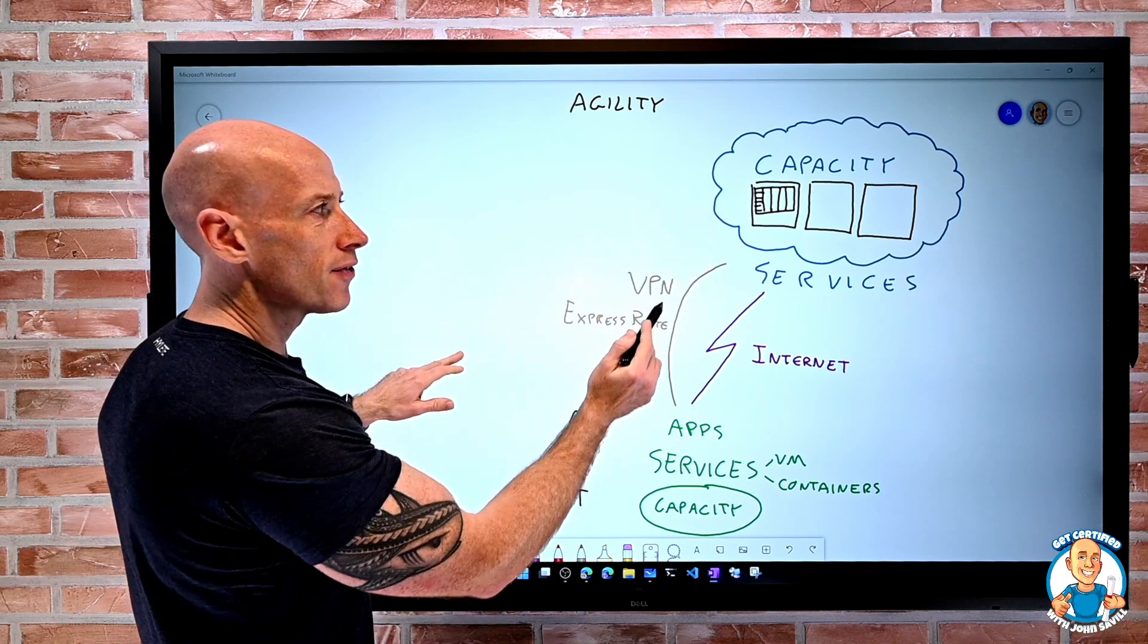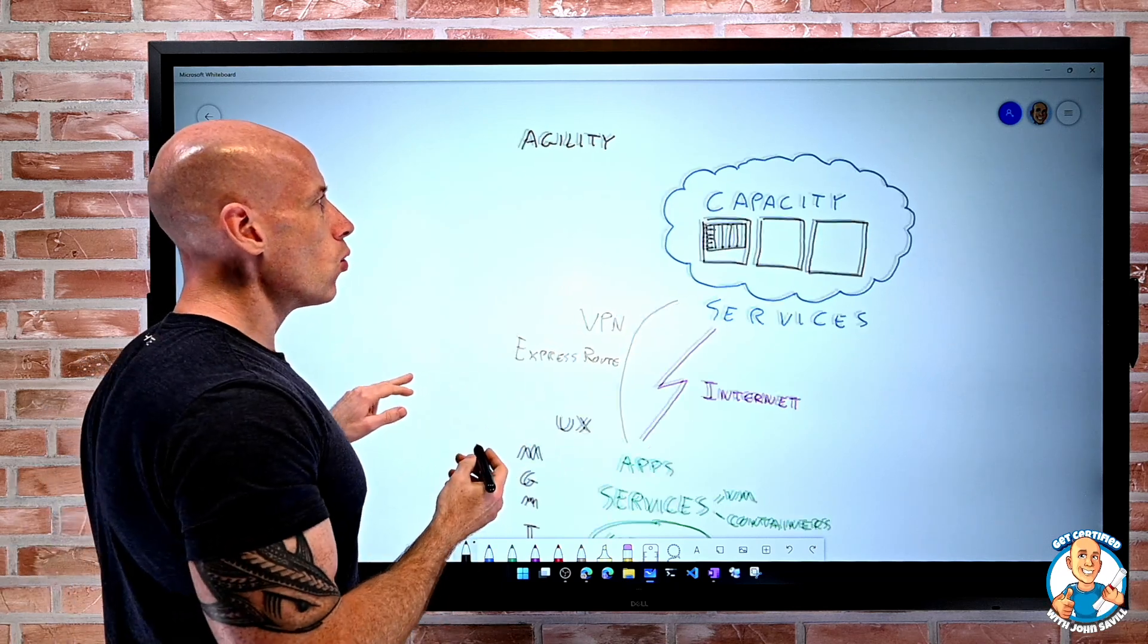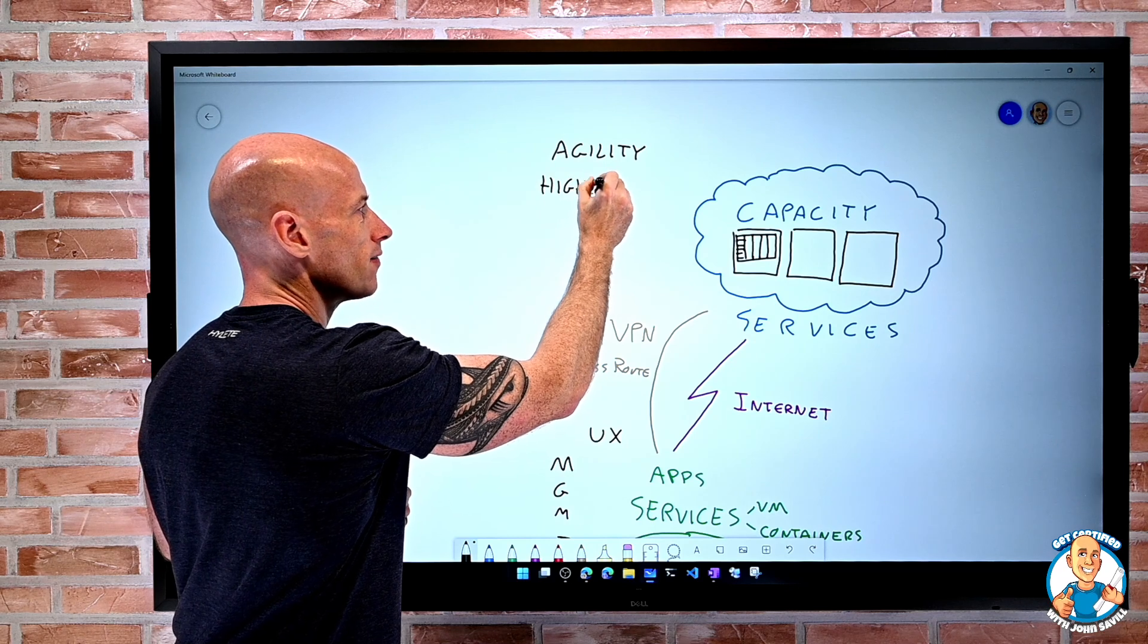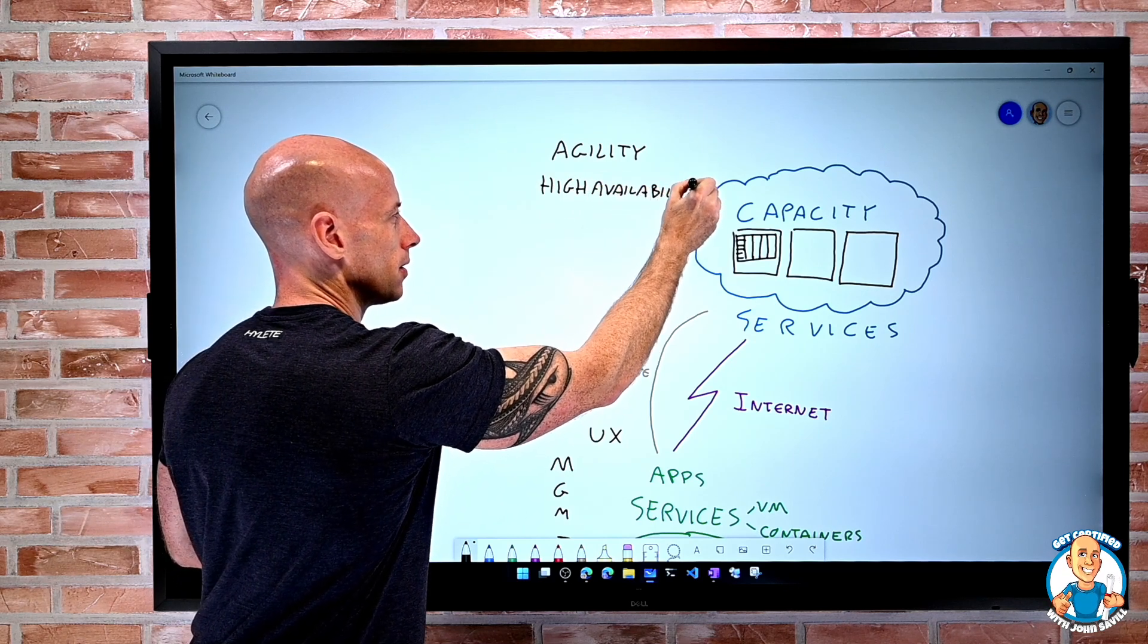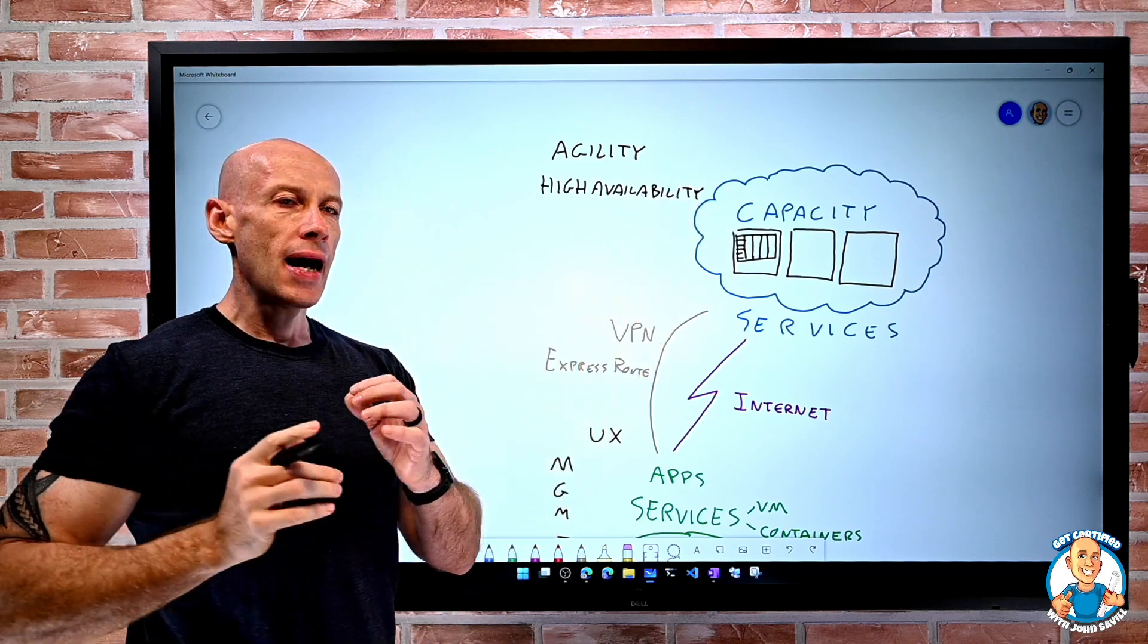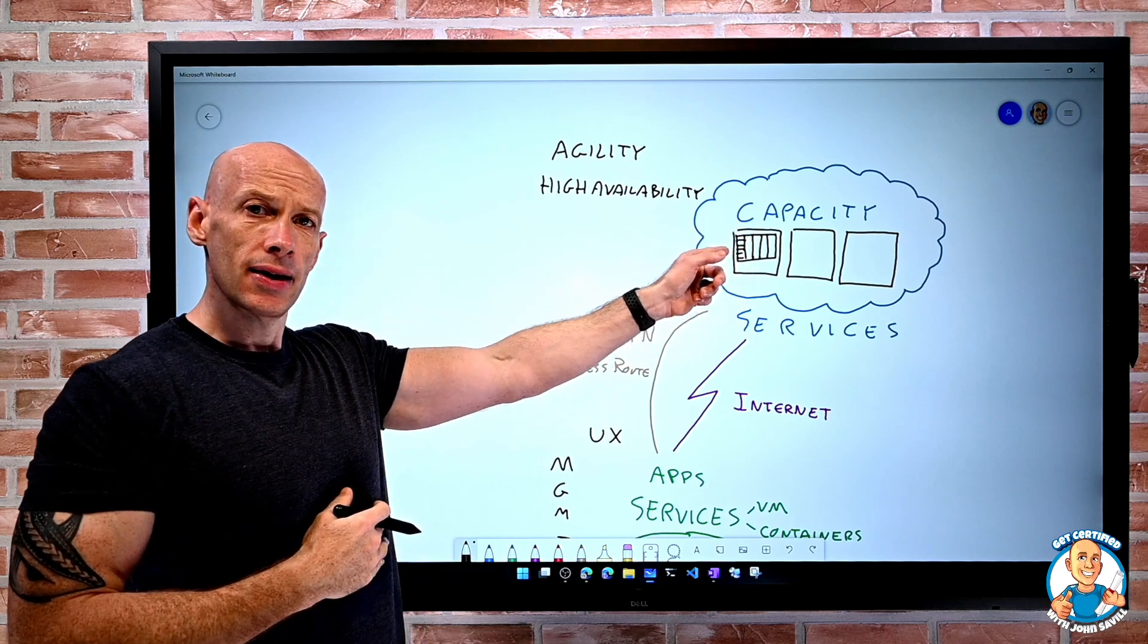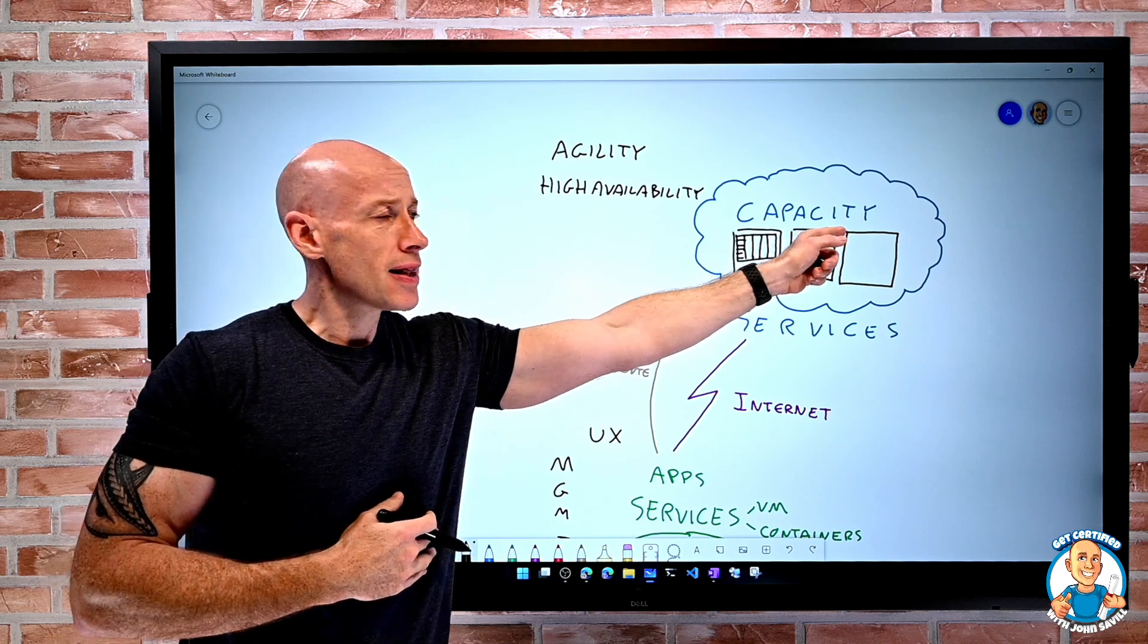Now, because I have these different physical buildings and all these different racks, it also helps me with high availability. I can absolutely think about, hey, I'm going to have some instances running in this rack, some in this rack, some in this building, and some in this building.